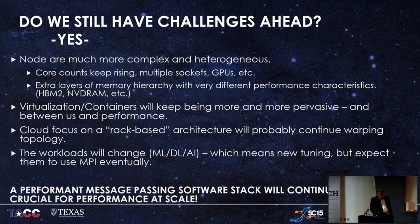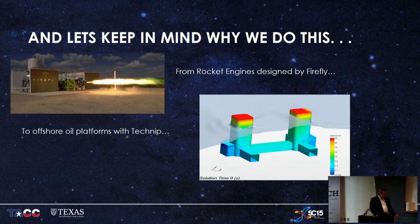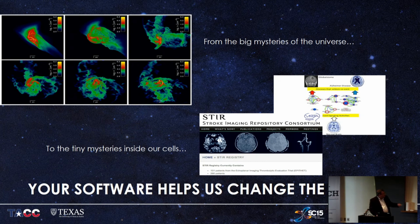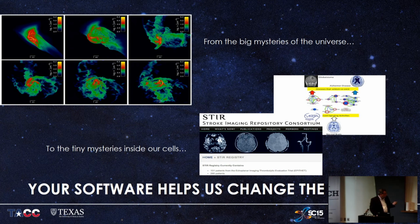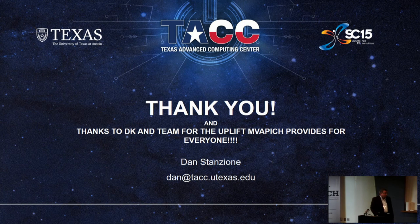We have to keep developing, making new innovations, and doing cool things. And keep in mind why we do this: to build rocket engines, do offshore platforms, simulate early galaxies targeting the James Webb Space Telescope, look at genetic pathways between Alzheimer's and glioblastoma where we can cross treatments, and stroke diagnosis from imaging. The software that all of you contribute to — and MVAPICH is really key — is helping us change the world. Thanks very much, and keep making us great software.